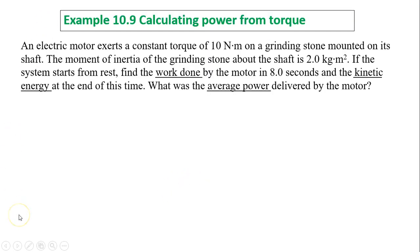Another example. An electric motor exerts a constant torque of 10 newton-meters on a grinding stone mounted on its shaft. The moment of inertia of the grinding stone about the shaft is 2 kilograms meter squared. If the system starts from rest, find: first, the work done by the motor in 8 seconds; next, the kinetic energy at the end of this time; and lastly, the average power delivered by the motor.